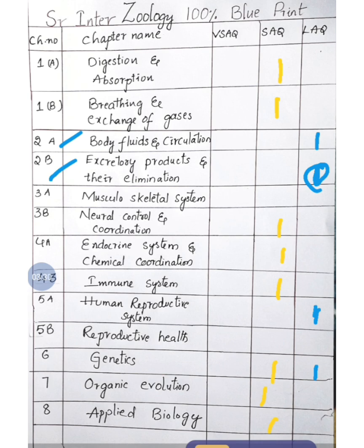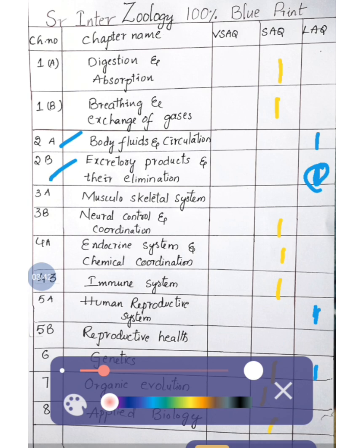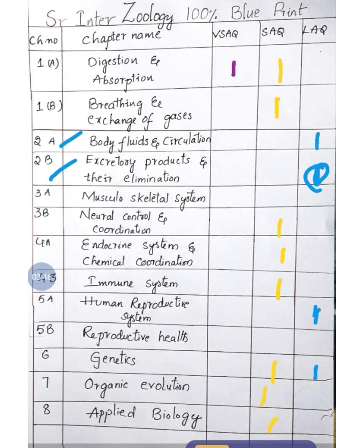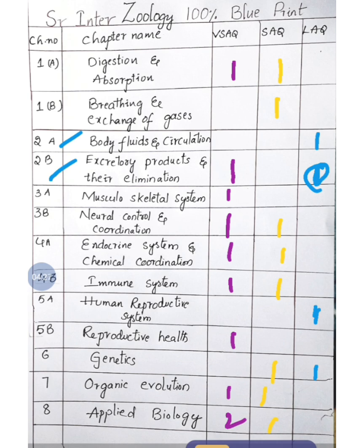For very short answer questions: Digestion and Absorption — one; Breathing and Exchange of Gases — no question; Excretion — one; Musculoskeletal System — one; Neural Coordination — one; Endocrine System — one; Human Reproductive Health — one; no question from Genetics very short answer; Organic Evolution — one; Applied Biology — two. That gives a count of two, three, four, five, six, seven, eight, nine...